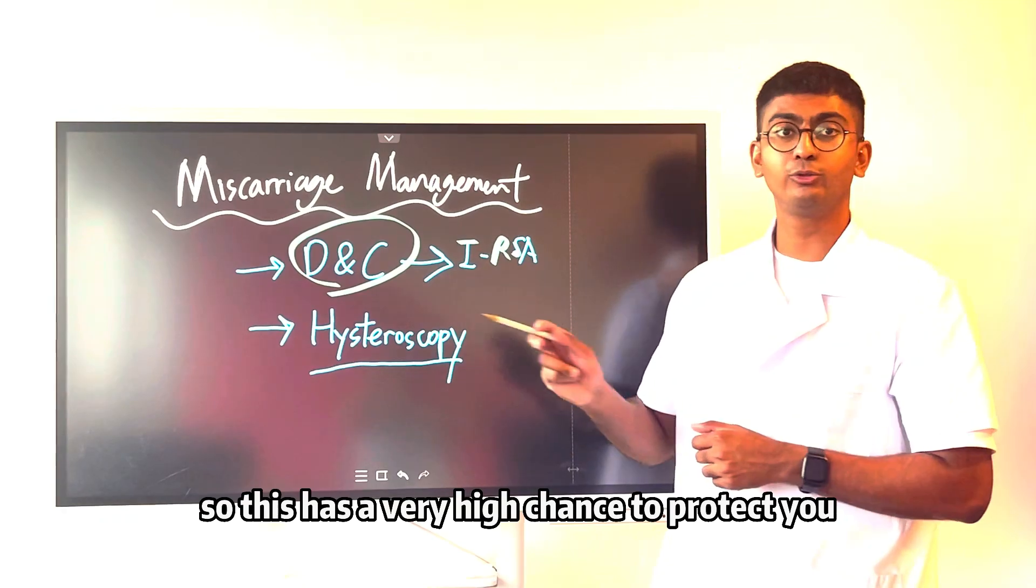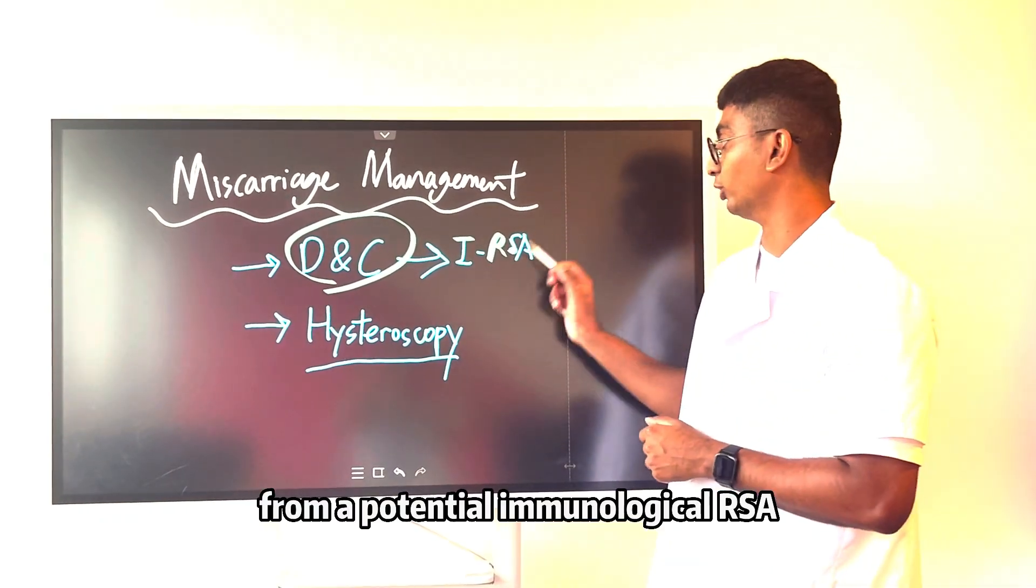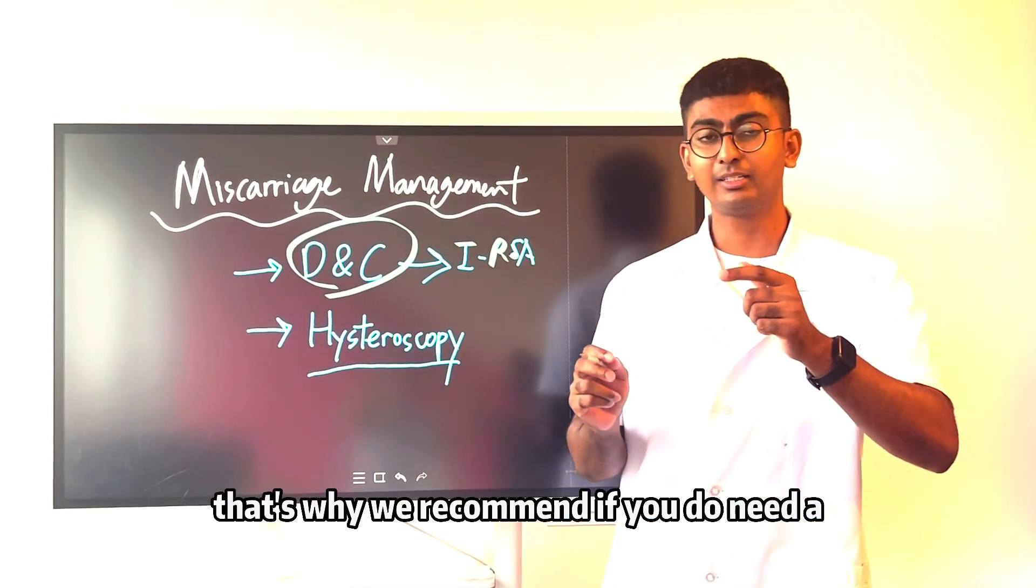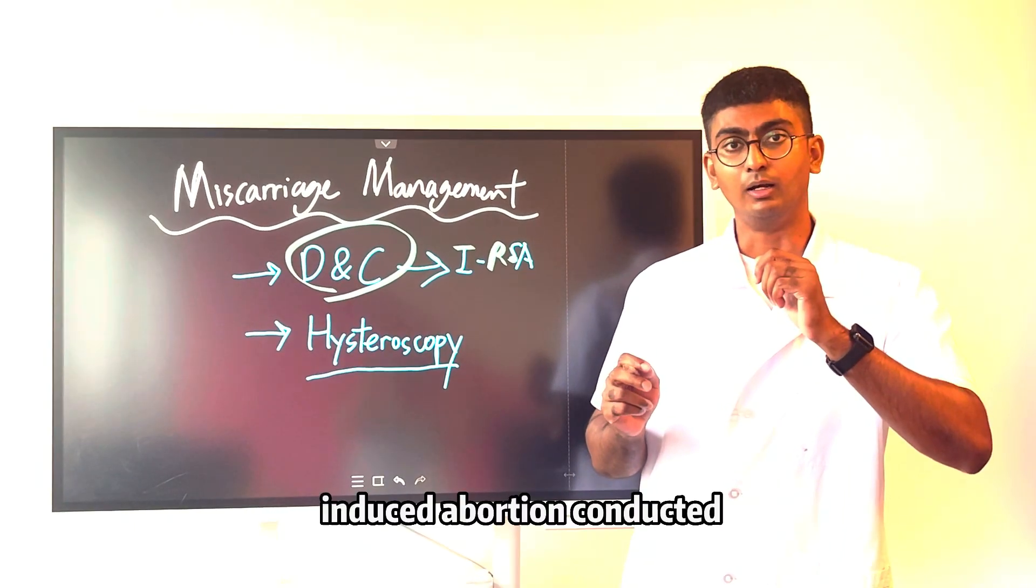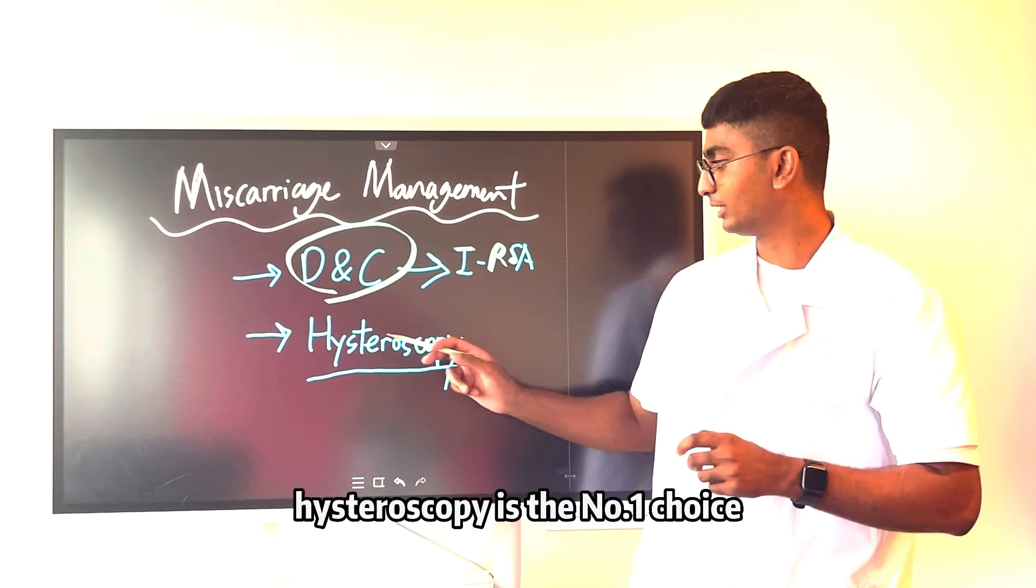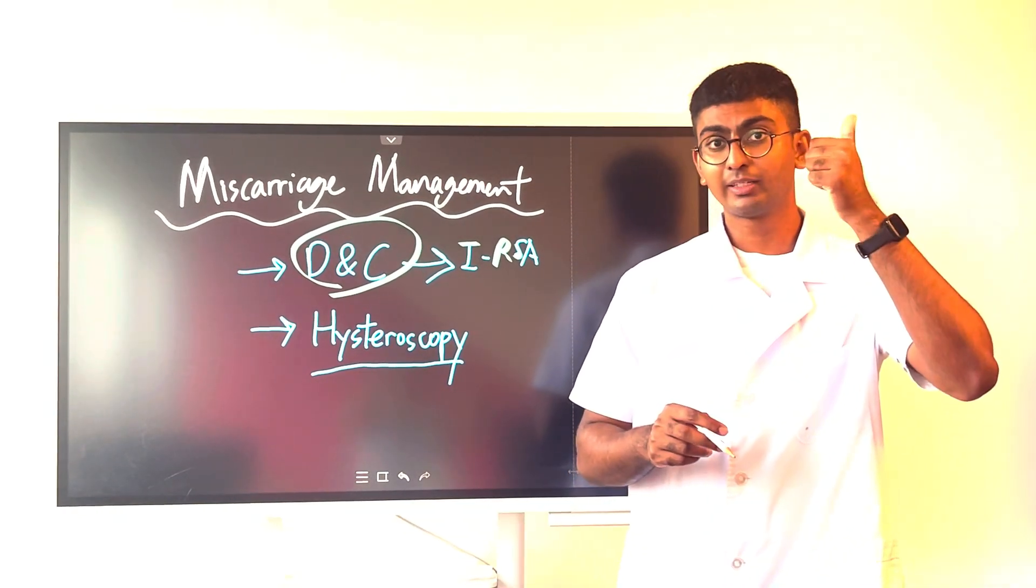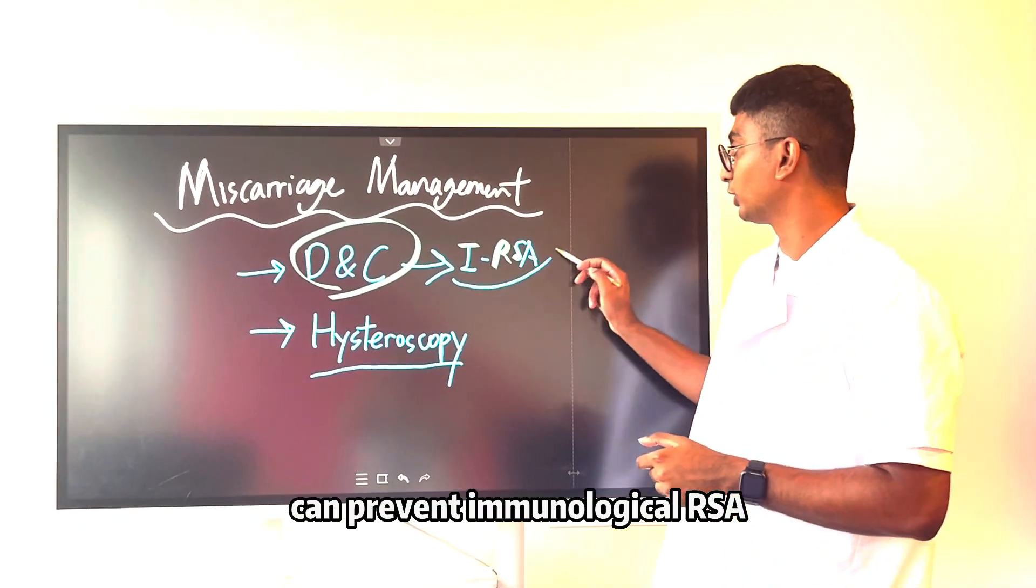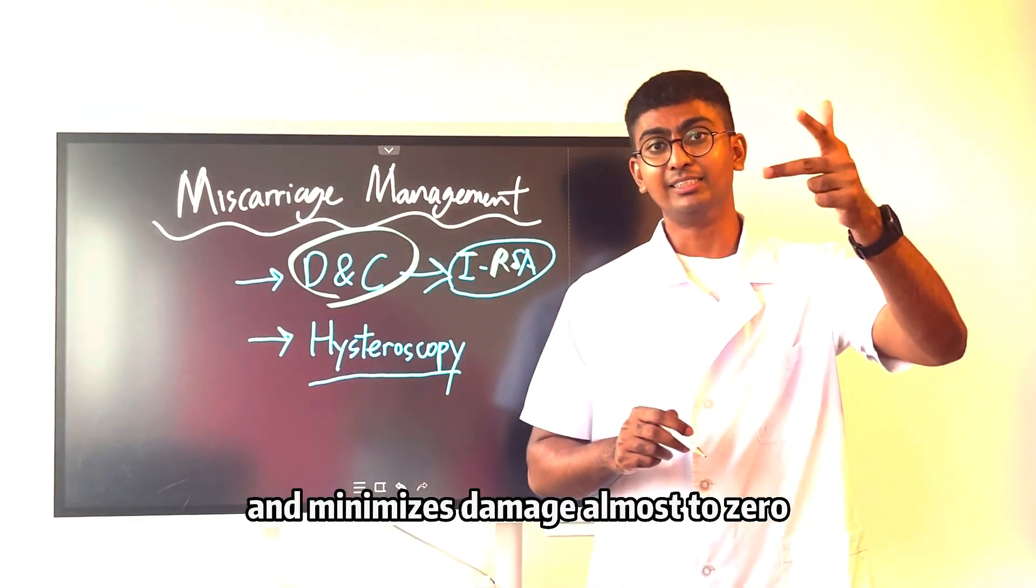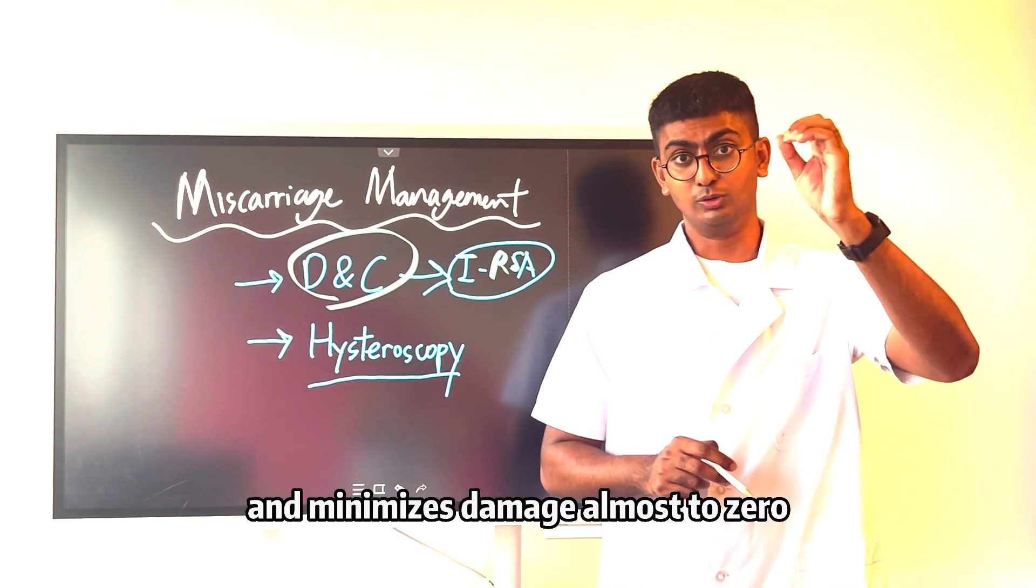This has a very high chance to protect you from a potential immunological RSA. That's why we recommend if you do need an induced abortion conducted, hysteroscopy is the number one choice because it has direct visualization, can prevent immunological RSA and minimizes damage almost to zero.